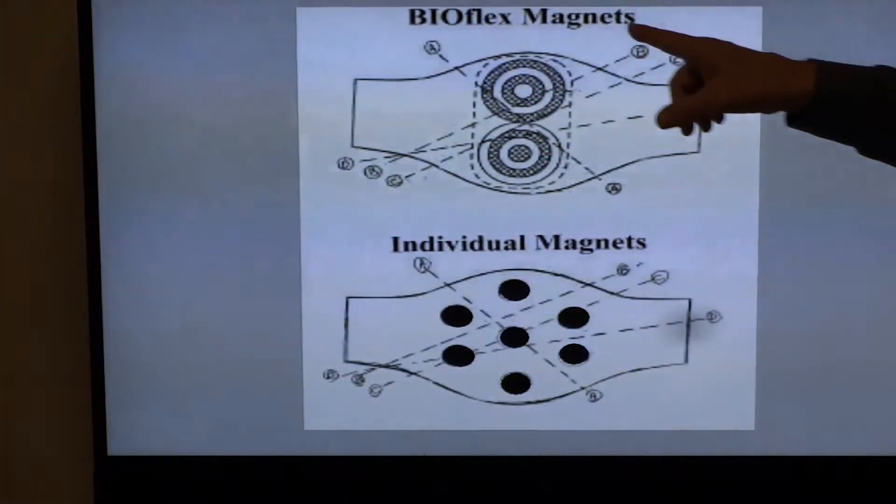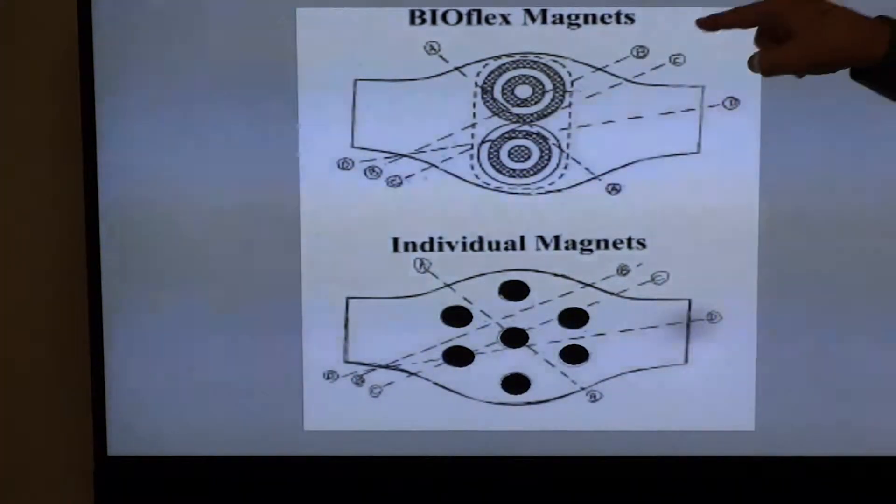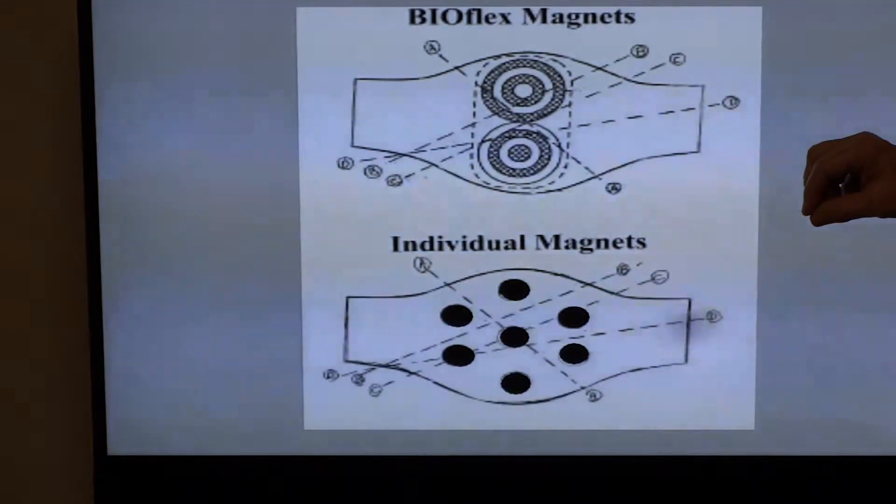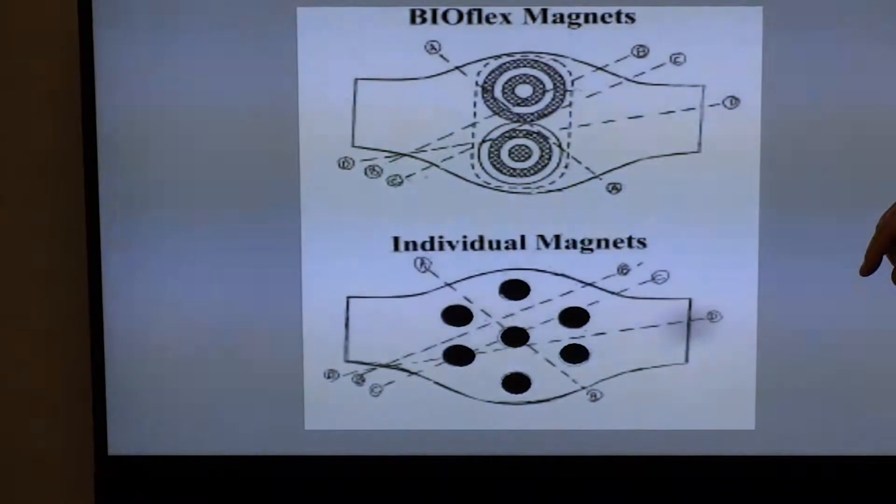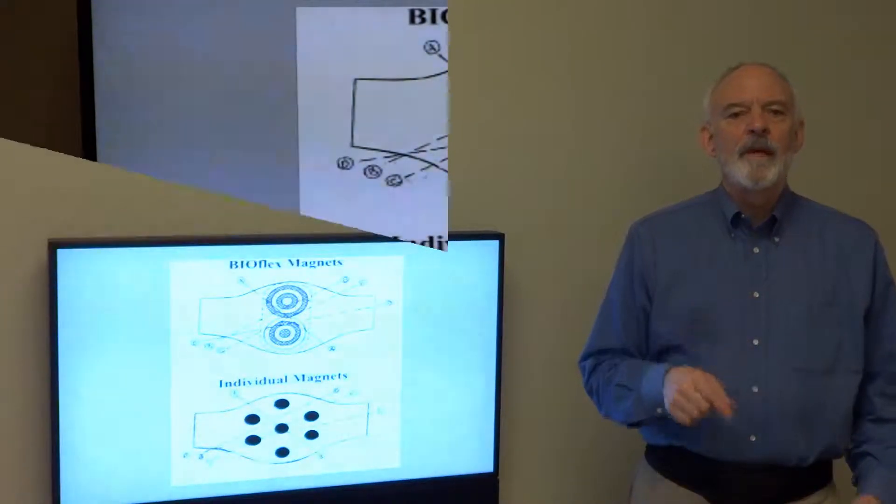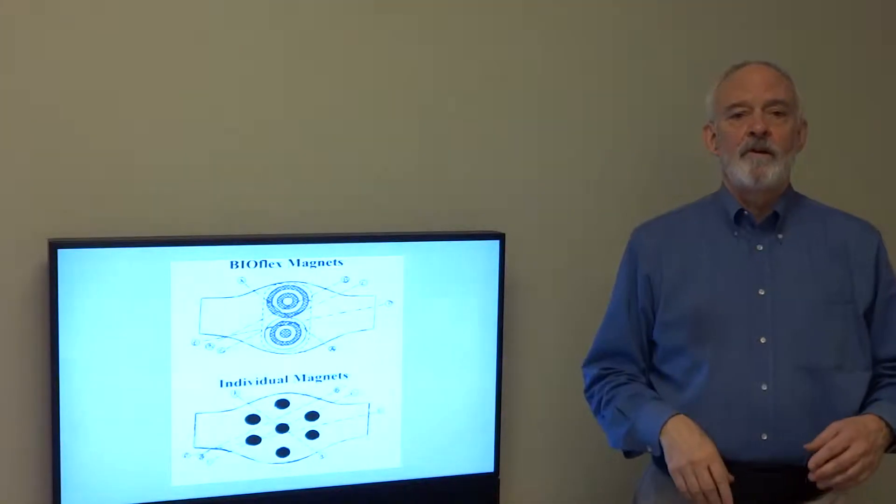And finally, since BioFlex is round, it guarantees a 90 degree orientation with the blood flow, which is known as the Hall effect, which is very difficult with individual magnets. So tell me, which one do you think is better?